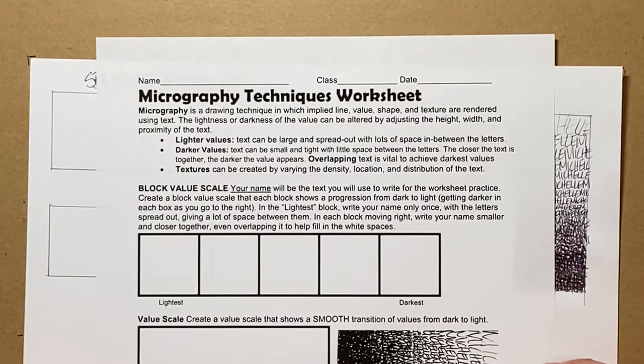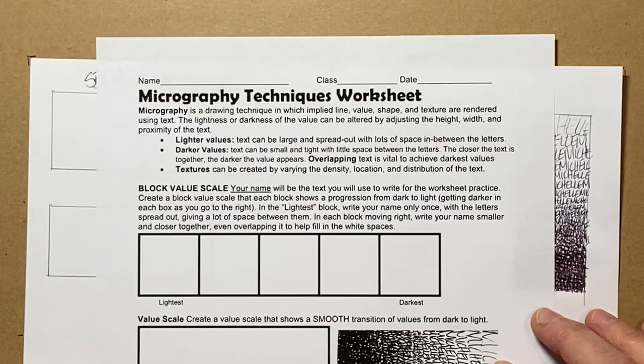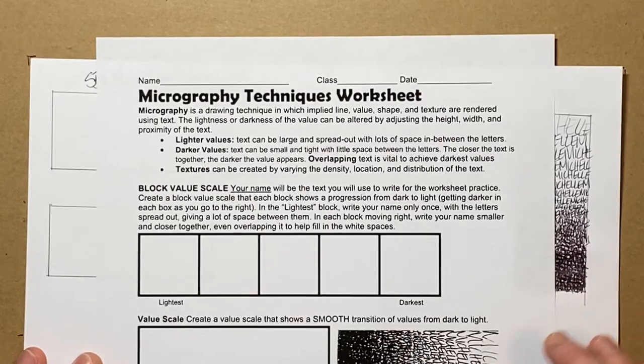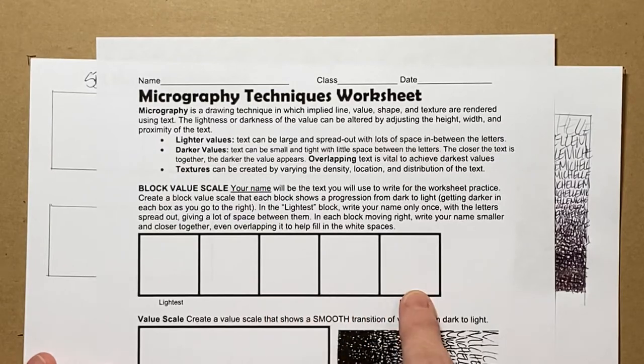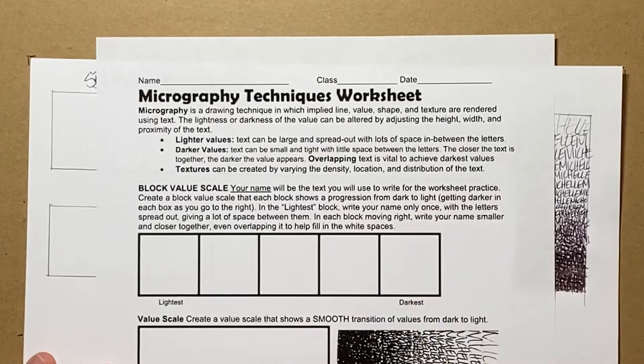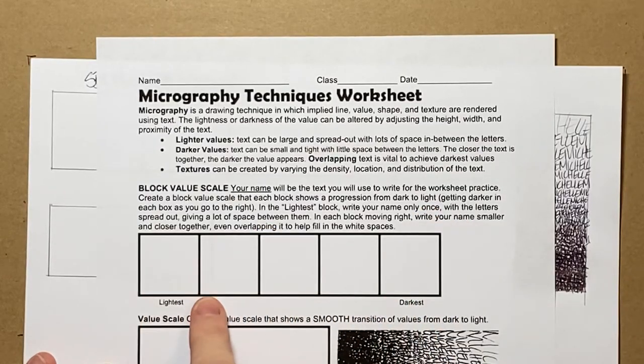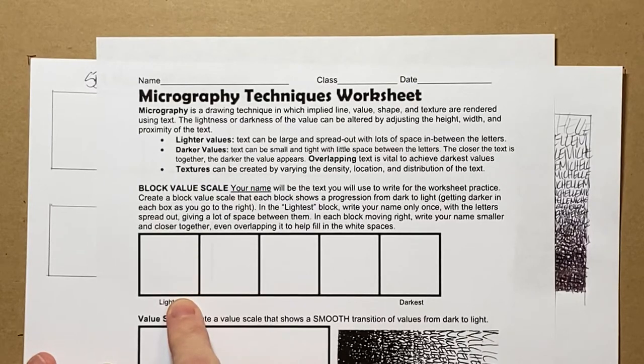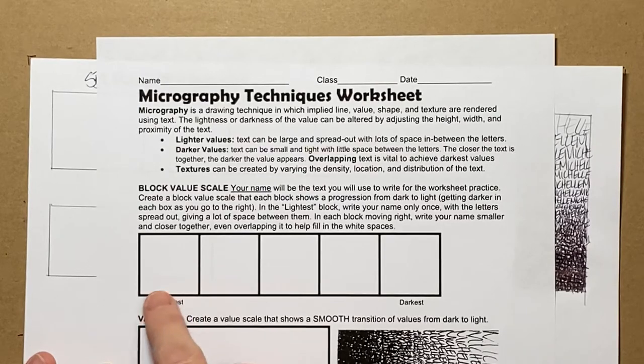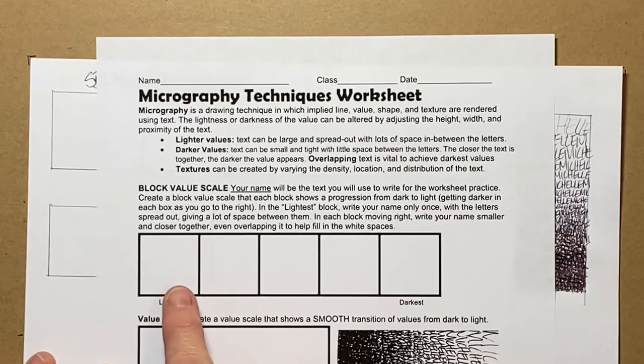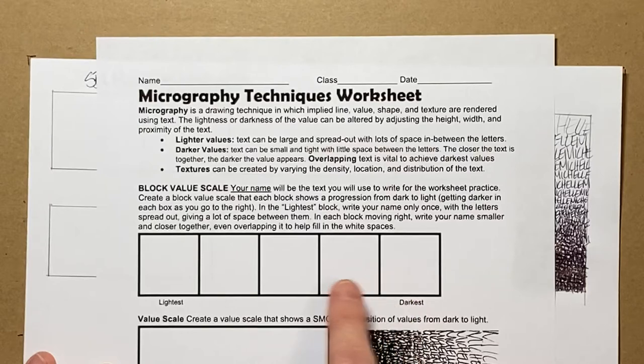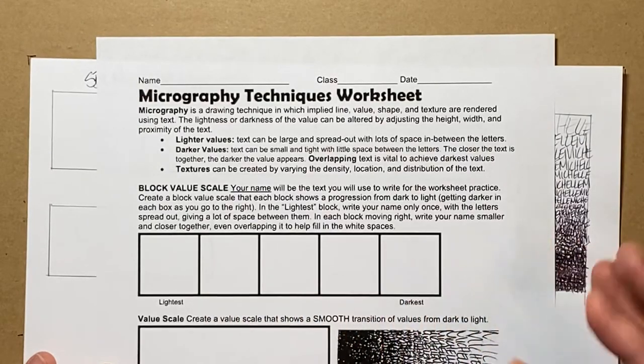The first thing that we're going to do is create what's called a block value scale. You're going to use your name as the text for this worksheet practice. To create a block value scale, each block shows a progression of values from dark to light. The lightest block we're only going to write our name once, possibly not even writing the whole thing, with the letters spaced out big with lots of white space showing. Then as we move along in our boxes here, we're going to get denser and denser with our writing.